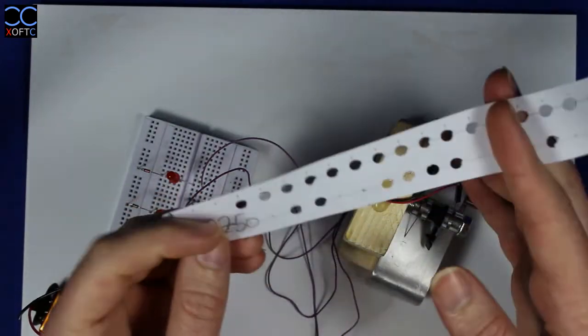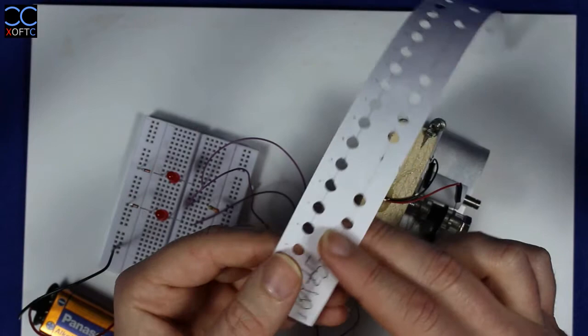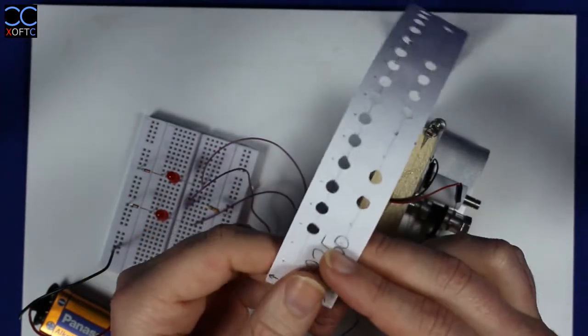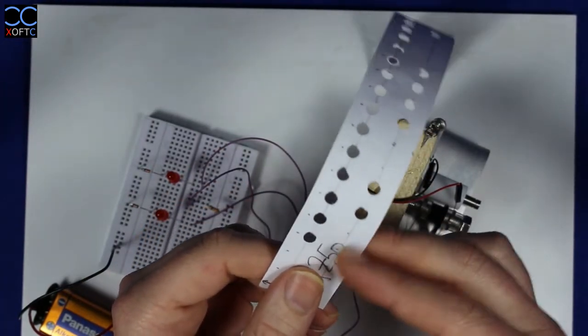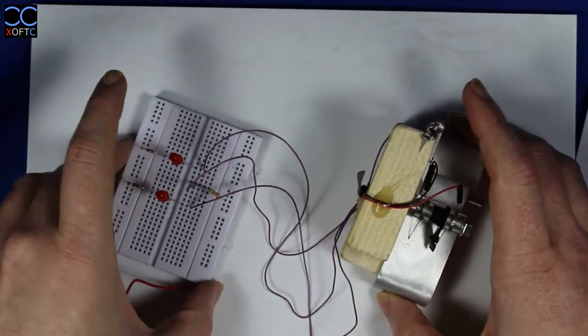It takes this punch card and where we have a hole, that means we have a one or a true, and where we don't have a hole we have a zero. There's little to explain about the circuit itself.